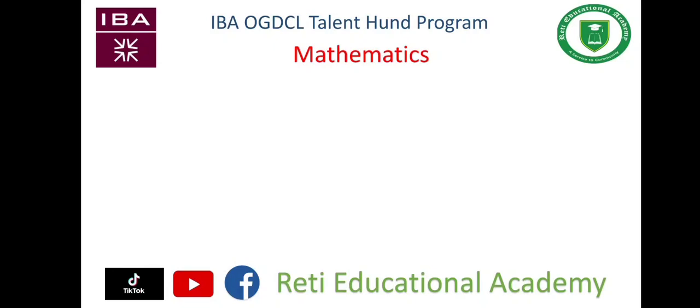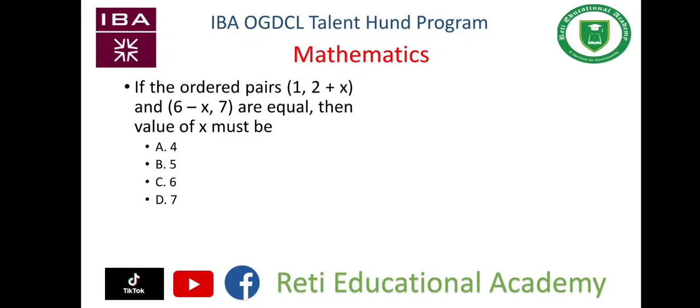Sample paper of IBA OGDCL Talent Program, mathematics section, question number two. If the ordered pairs (1, 2+x) and (6-x, 7) are equal, then value of x must be: A. 4, B. 5, C. 6, D. 7.